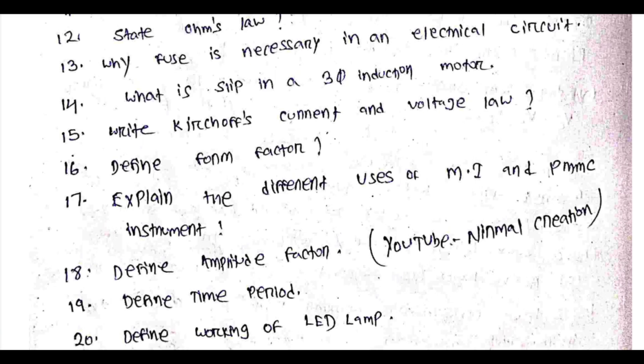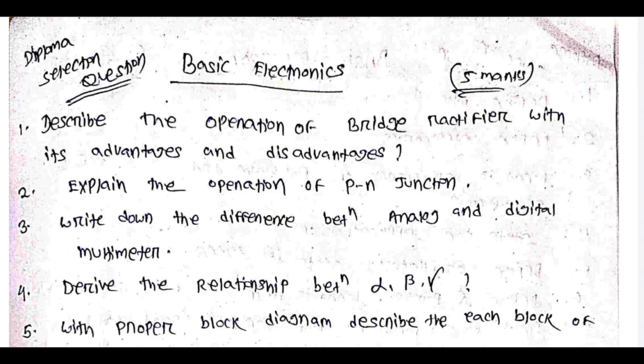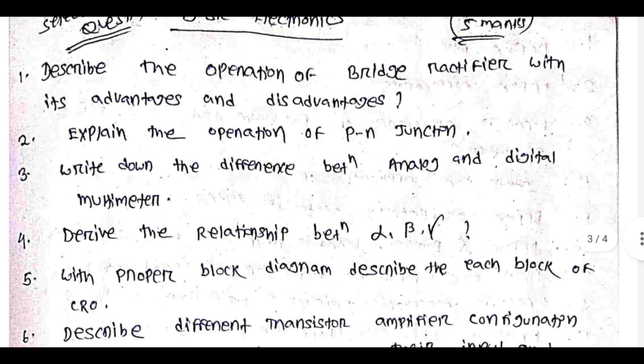Basic Electronics diploma selection questions are now covered. If you have basic electrical electronics in the first semester, you will see related content in the second semester as well. These questions span 5-year and 10-year repeated patterns.